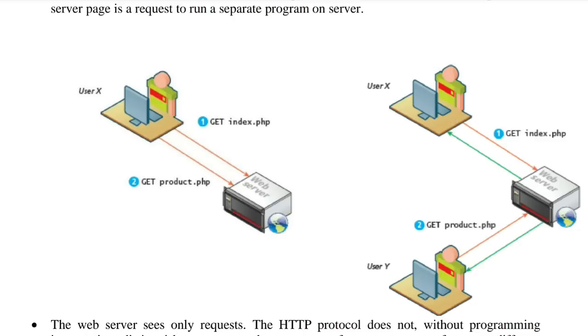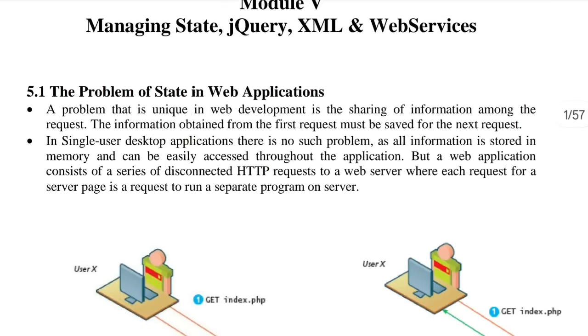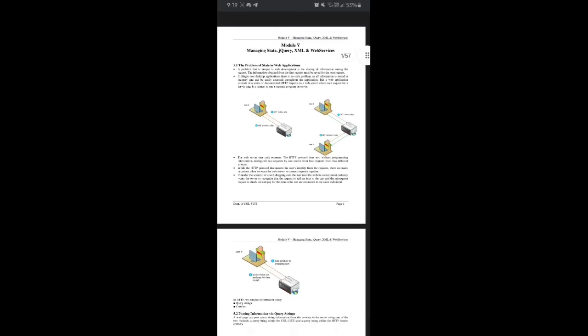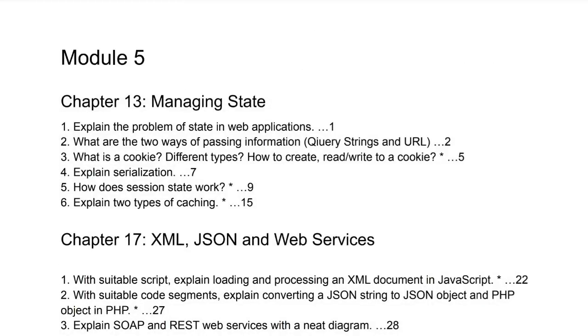To overcome this problem, we use cookies. Basically, the user's information — who is accessing the web — is not stored. That's what the problem of state in web applications is. If you explain it with the theory and the diagram, that should be sufficient.